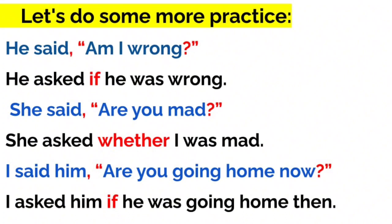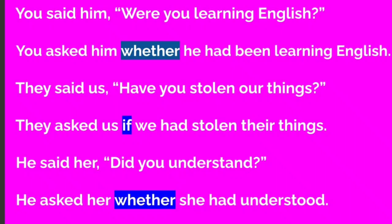First person and second person pronoun reporting verb objectives: 'I said to him, are you going home now?' becomes 'I asked him if he was going home then.' 'You said to him, were you learning English?' becomes 'You asked him whether he had been learning English.' 'They said to us, have you stolen our things?' becomes 'They asked us if we had stolen their things.' 'He said to her, did you understand?' becomes 'He asked her whether she had understood.' So tenses also changed.